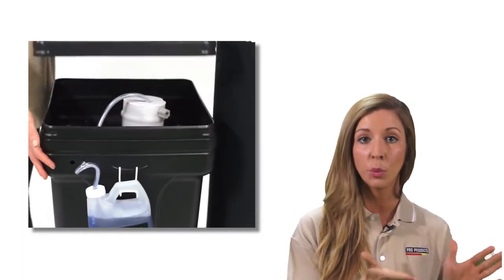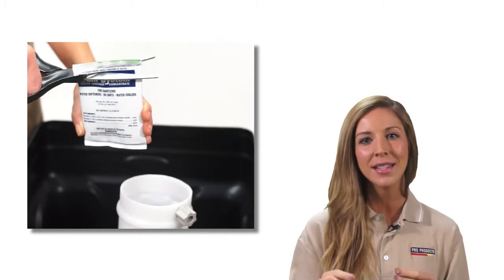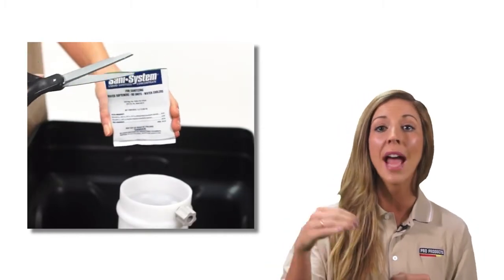To sanitize your water softener, remove the lid from your brine tank and the brine tube cap. Cut open one packet of Sani-System for water softeners and pour down the brine well tube.